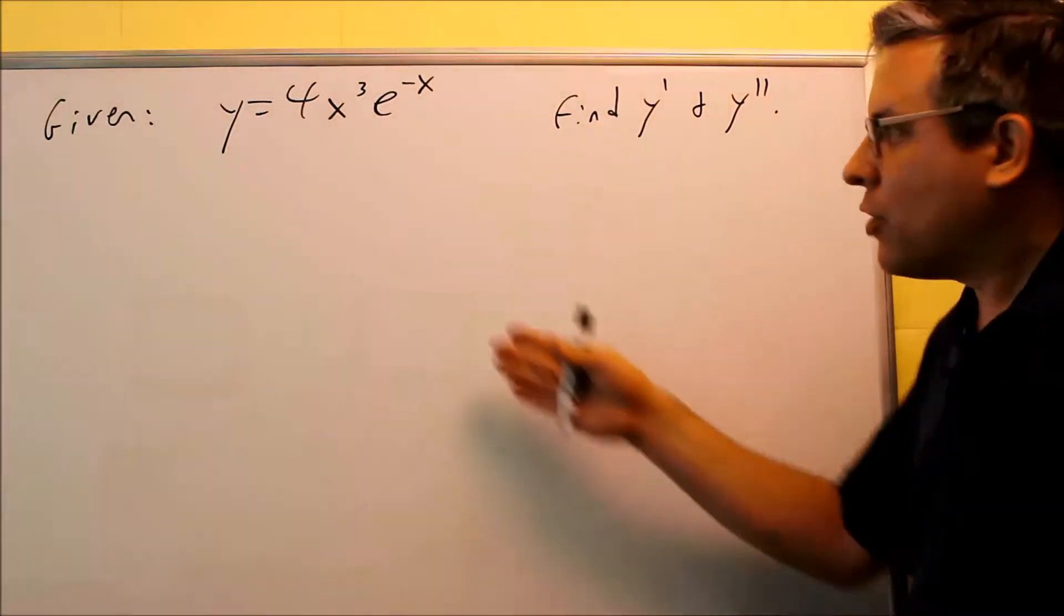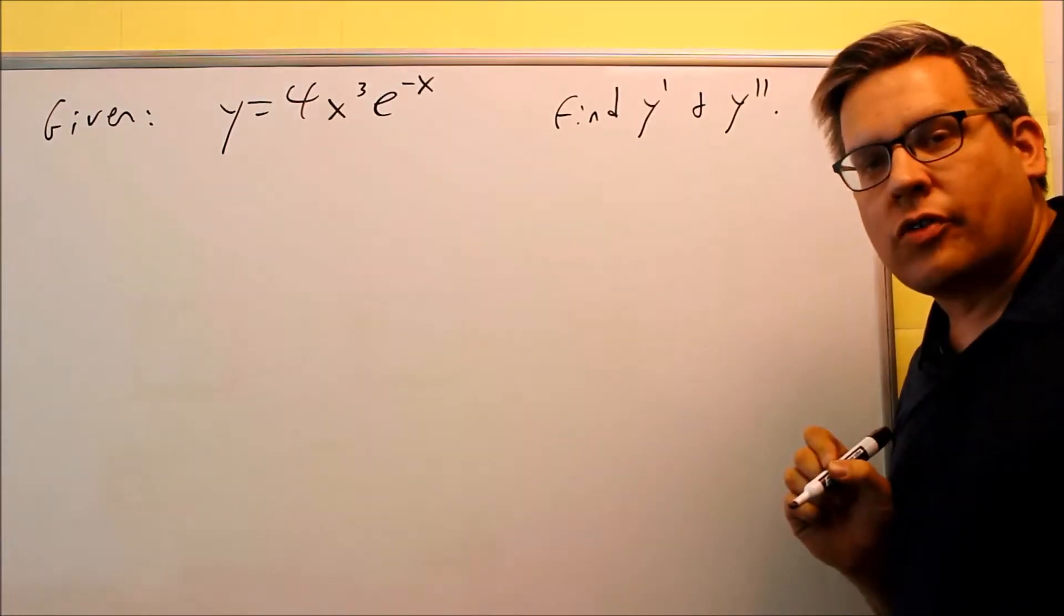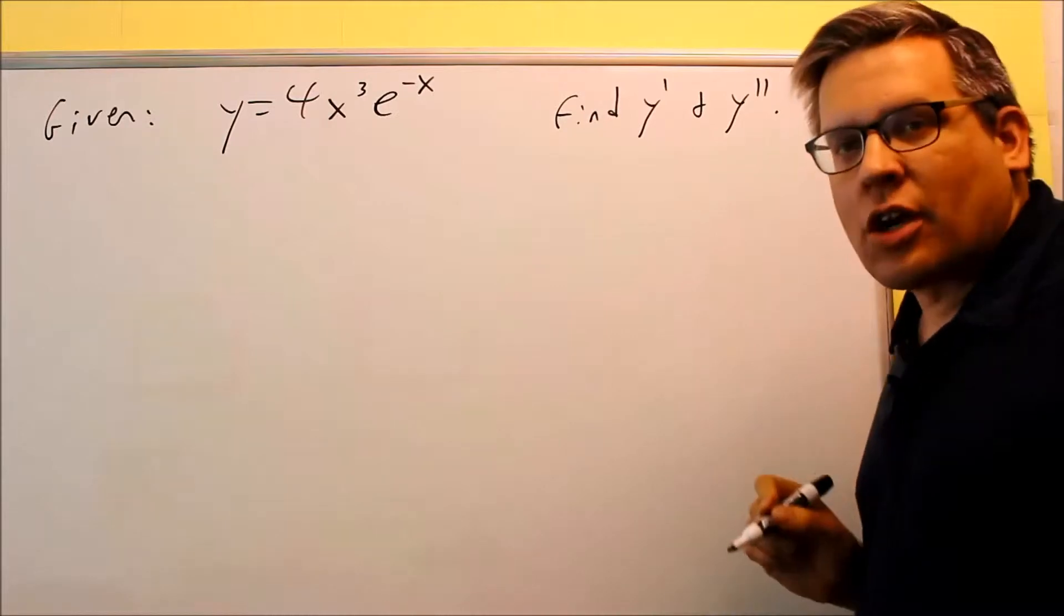This problem is going to require us to use product rule. We have two things multiplied together. We want to find the first and second derivative. We'll find the first derivative, then we'll take the derivative of that to get the second derivative.